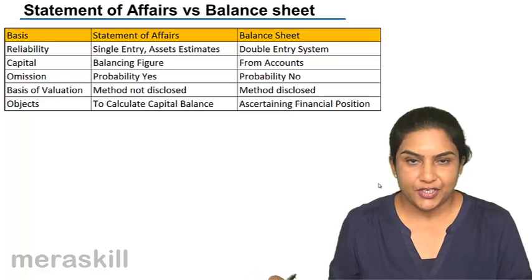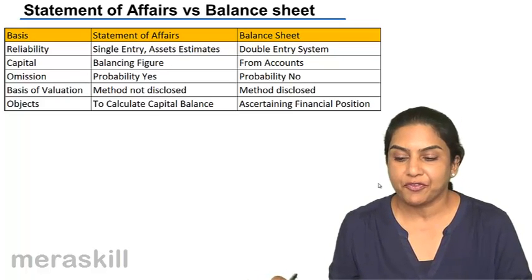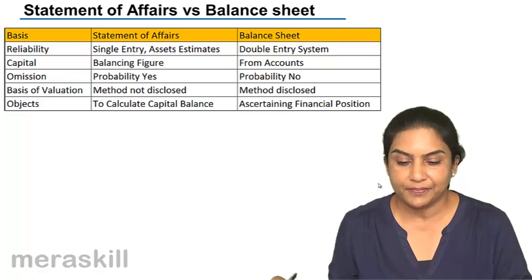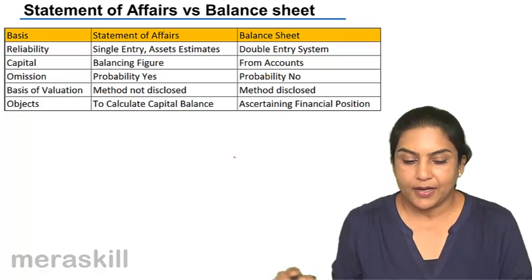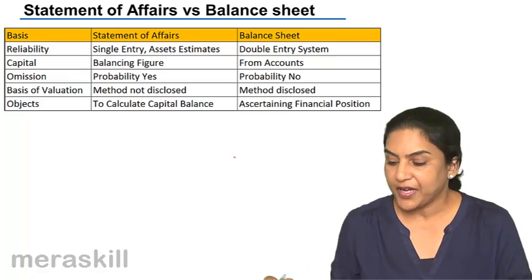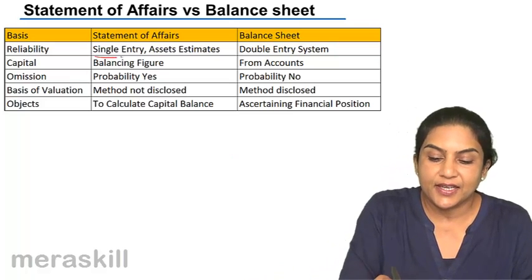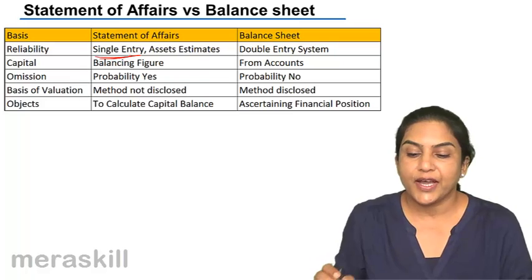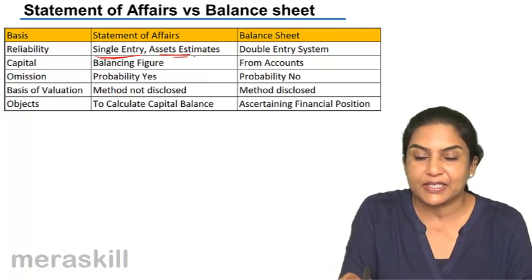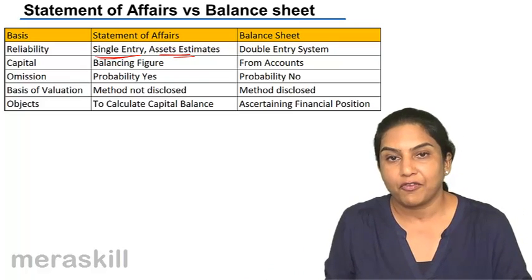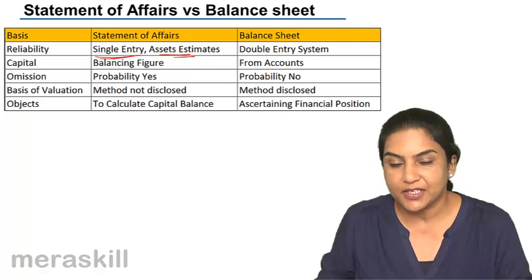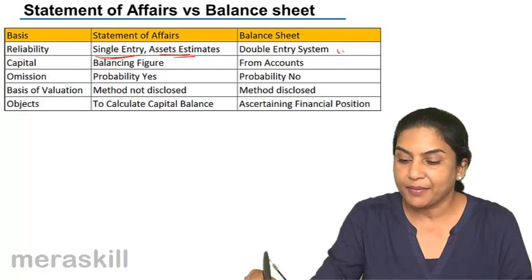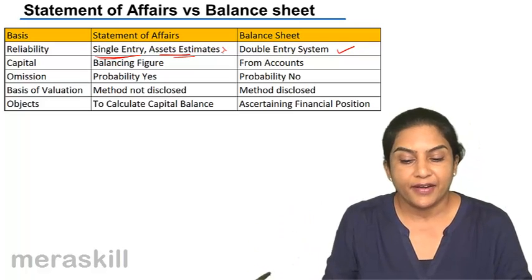What is the difference, the distinction between statement of affairs versus balance sheet? Reliability: a statement of affairs is actually prepared under the single entry system, so you might have estimates of figures, estimates of your assets. But a balance sheet is under the double entry system and is far more reliable. So the balance sheet is reliable, whereas the statement of affairs is not really reliable.